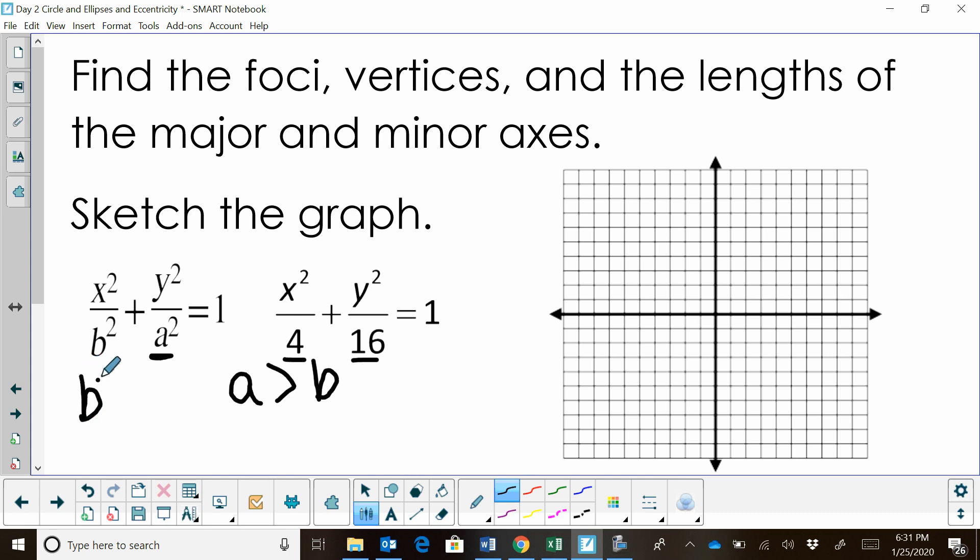b squared is the smaller value, so b squared must be 4. When we take the square root, we get 2. We don't do positive and negative 2 because this is a distance, so it's just positive 2.